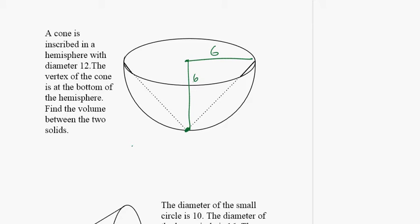Find the volume between the two solids. That means if you've got half of an orange or half of a sphere and you drill a cone hole into it, find what's left. Find the volume that's in between all this volume that goes around.